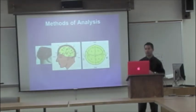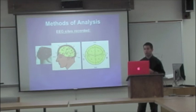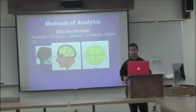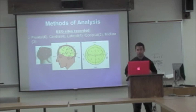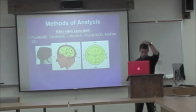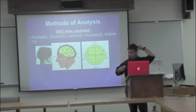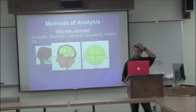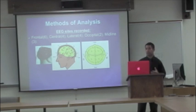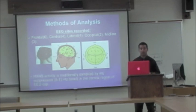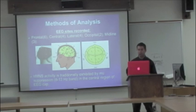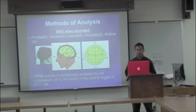Our EEG methods of analysis focused on five main regions of interest: the frontal, the central, the lateral, the occipital, and the midline. We went into this knowing that traditionally, human mirror neuron system activity is exhibited by mu suppression in the 8 to 13 hertz frequency of the EEG rhythms in the central region.